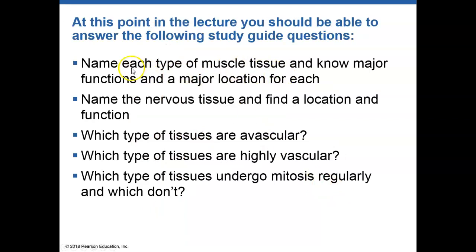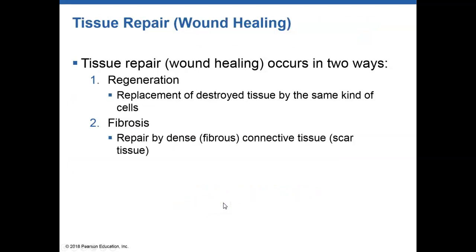At this point, you should be able to answer questions about the remaining tissues — which types are avascular, which ones are highly vascular, which ones undergo mitosis, and which ones can't. The last thing we're going to talk about is tissue repair, or wound healing. There are two basic ways that wounds heal: through regeneration, where we replace the damaged tissue, or through fibrosis, where we form scar tissue in that area.